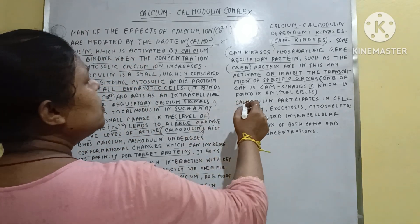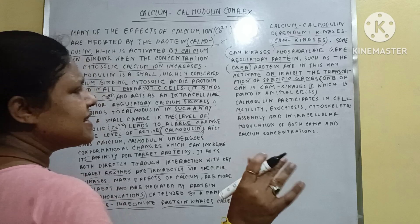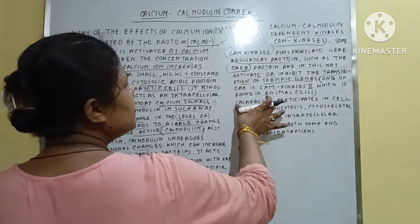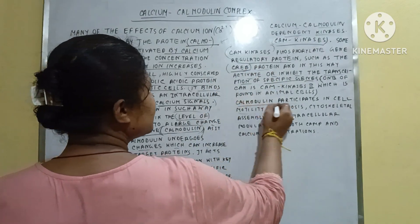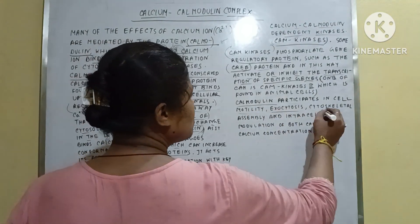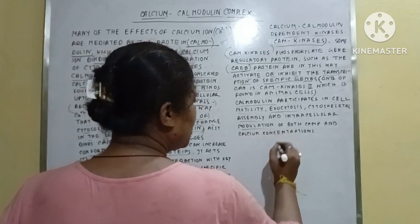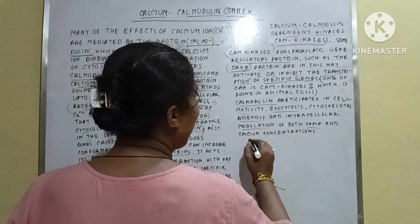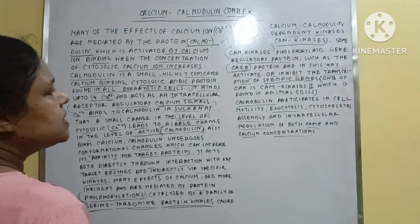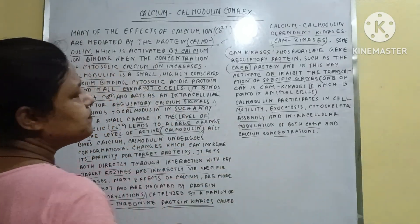Calmodulin participates in the same modalities. Some examples of where calmodulin proteins are involved include: exocytosis, cytoskeletal assembly, intracellular modulation of both CAM and calcium concentration, and obviously cell motility.